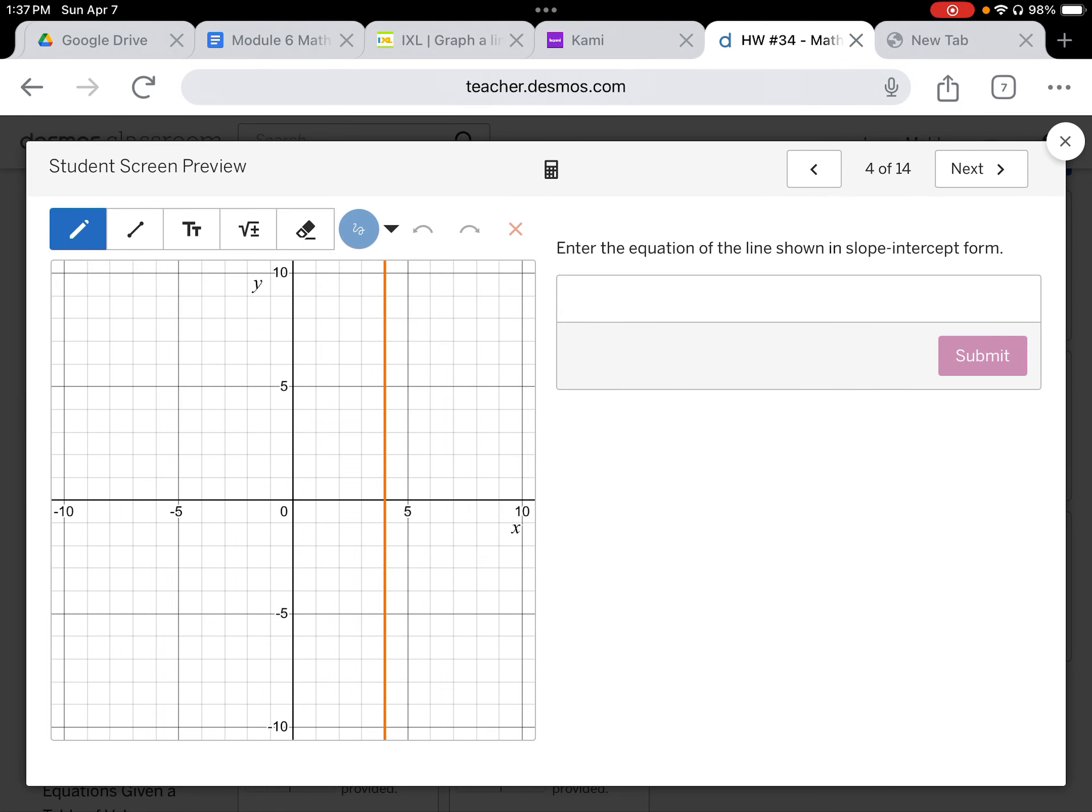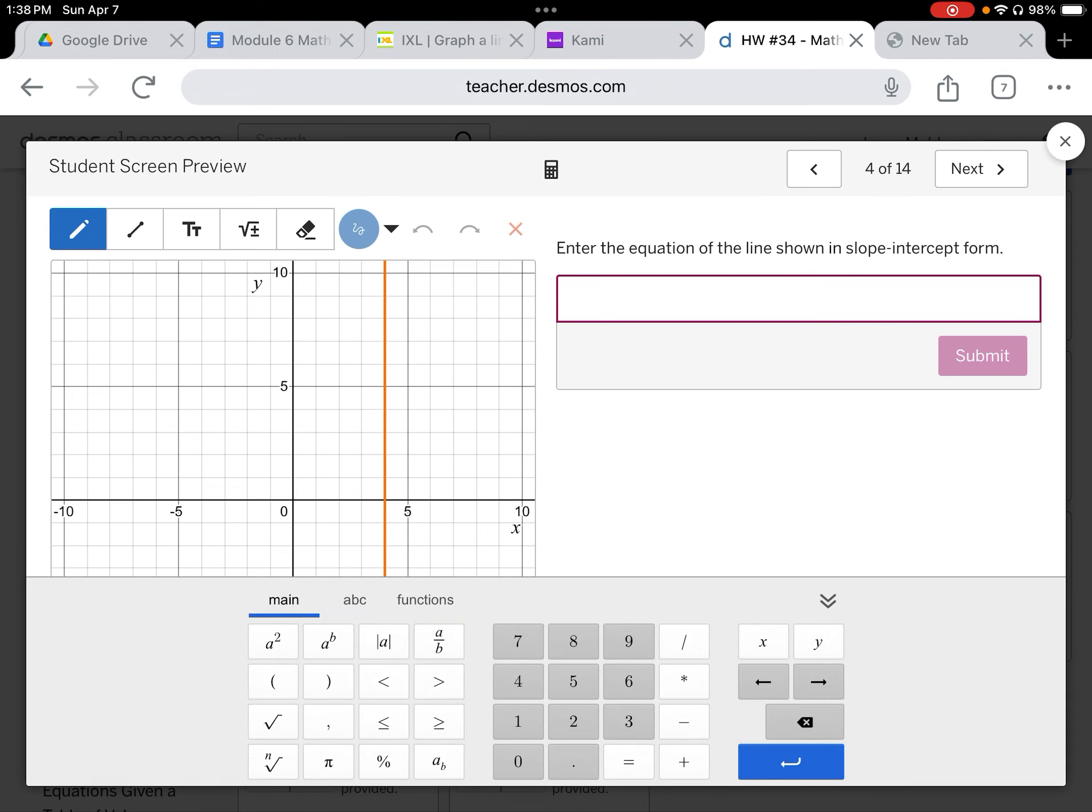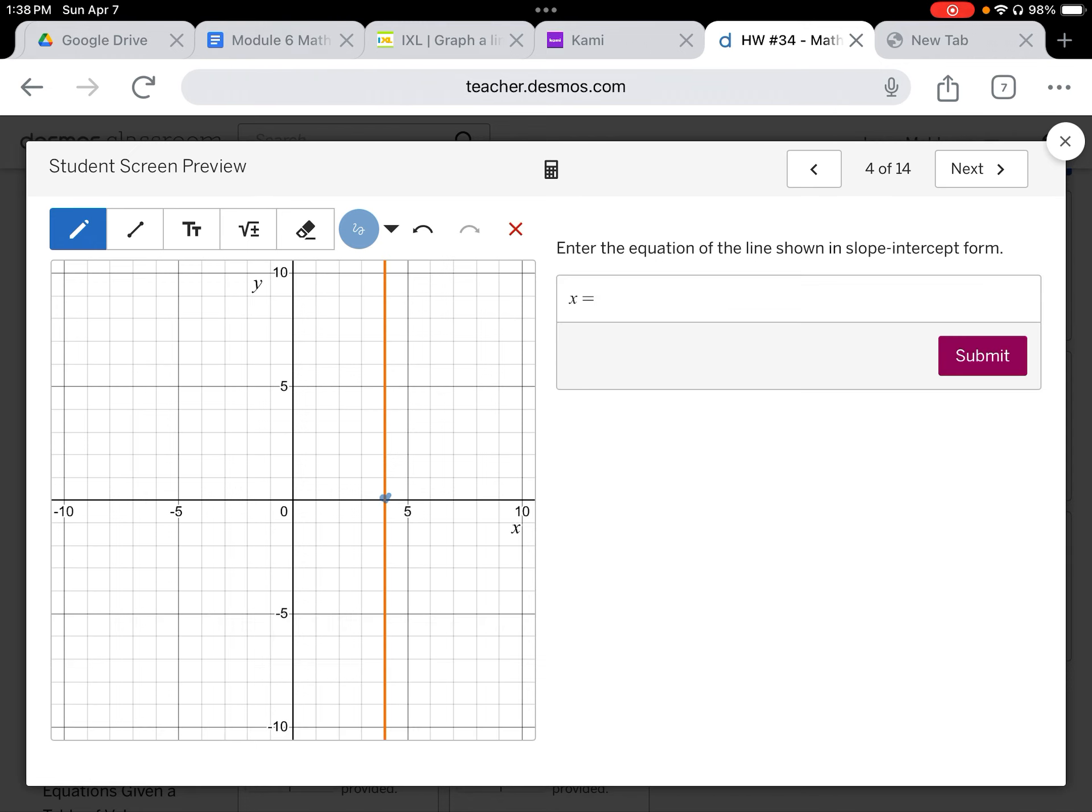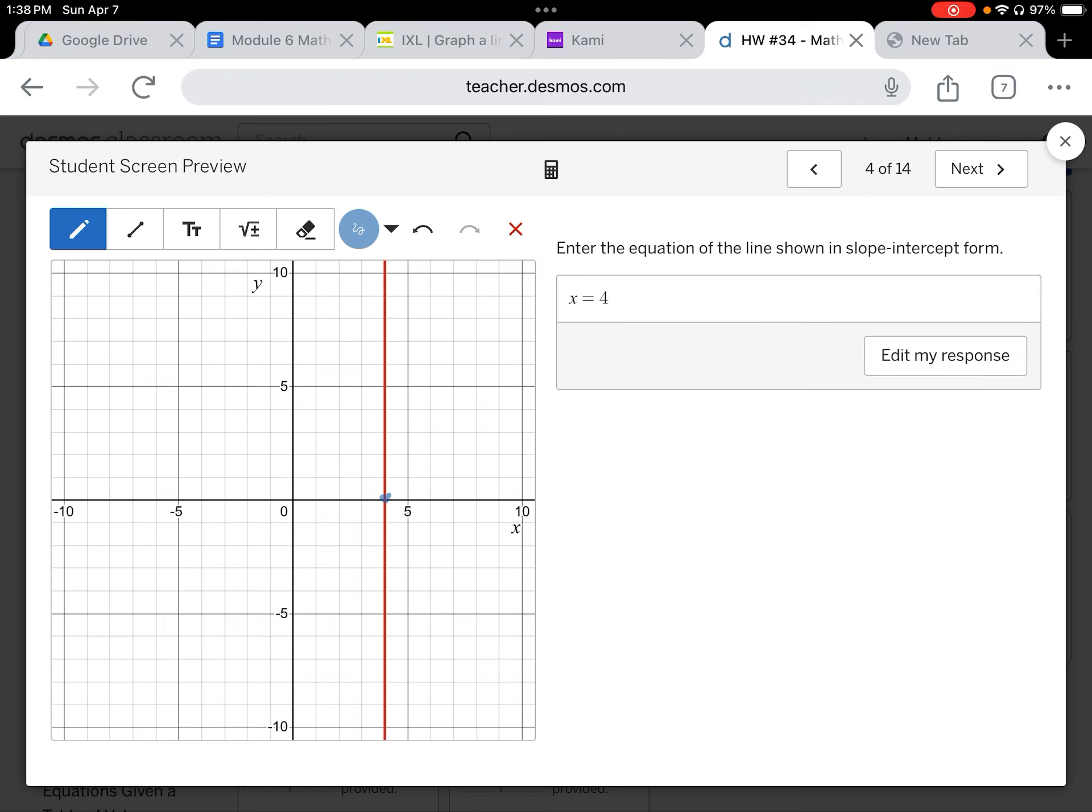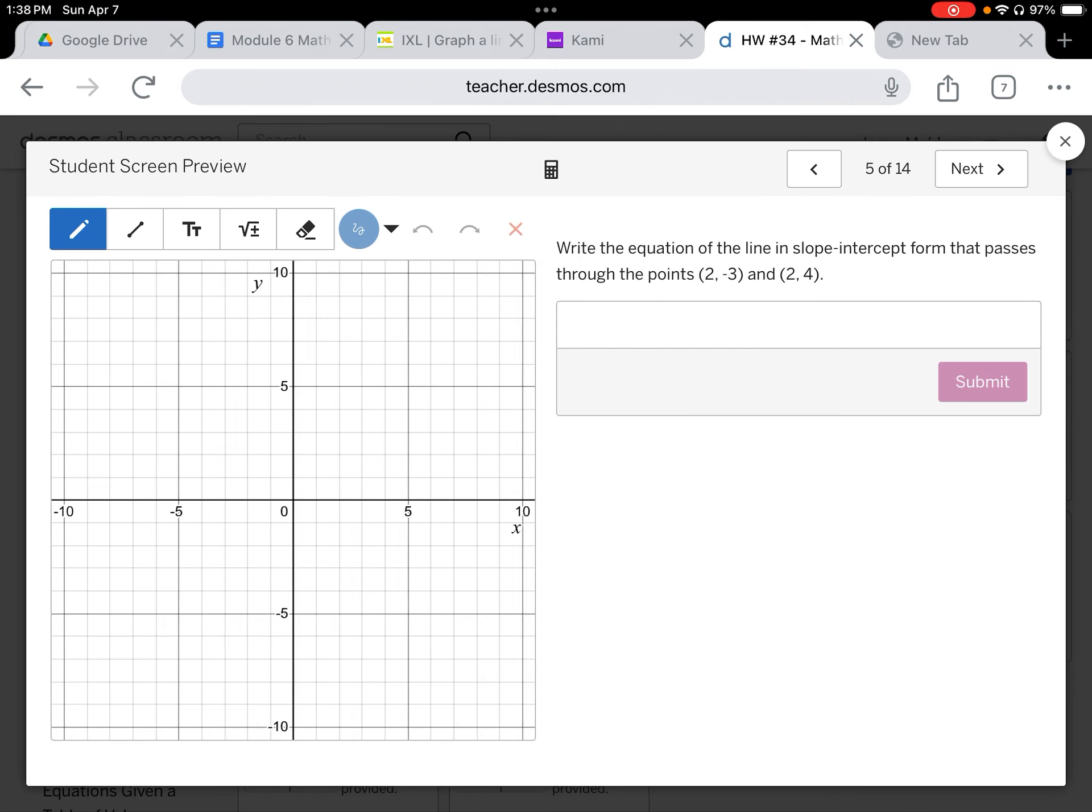Slide four. This is a vertical. It's going to be opposite. It's going to be x equals, and the x number is four. Again, look at the word wall, and there it is. It should overlap or draw on that.